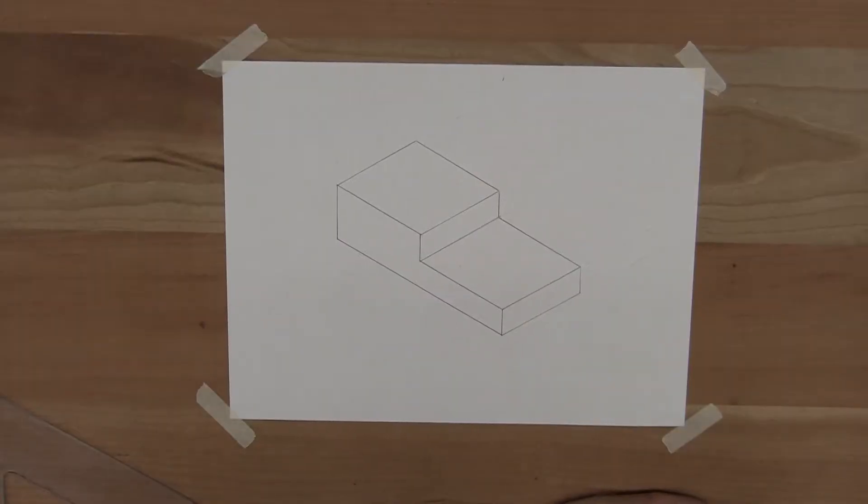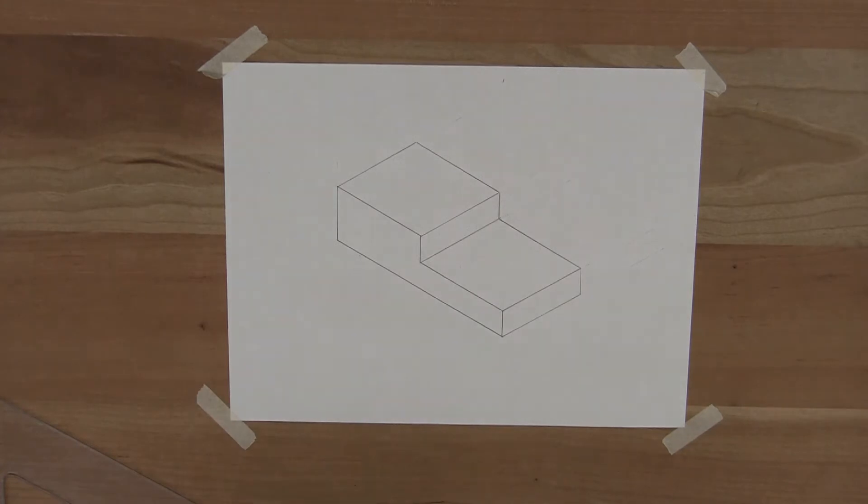When you're drawing in two dimensions, you can use your compass to draw circles, or when you're in school, you may have used a circle template. Now since in isometrics everything's at 30 degrees, those tools don't quite work. So today we're going to introduce this isometric circle template that is in your pizza box.